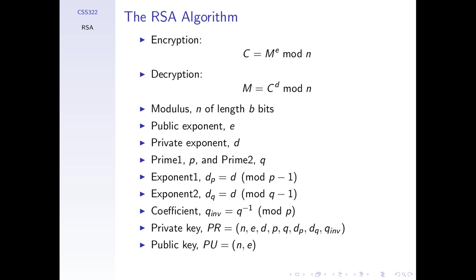We store the values of P and Q, plus three other values: exponent 1, exponent 2, and a coefficient. Exponent 1 is our private value D mod (P minus 1), exponent 2 is D mod (Q minus 1), and the coefficient is the multiplicative inverse of prime Q in mod P. Those three values are just there to improve performance during decryption. So the private key is the full set of parameters: N, E, D, P, Q, D_p, D_q, and the inverse of Q, while the public key is just N and E.